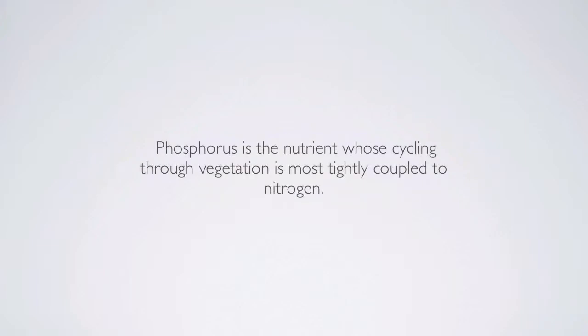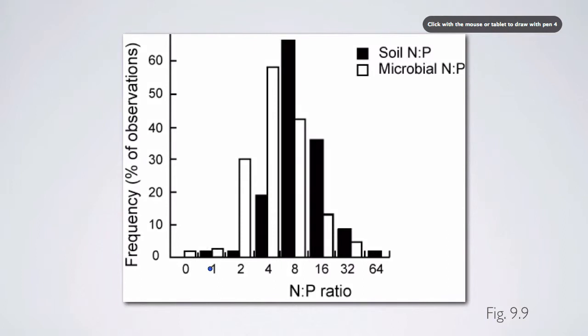We're going to just spend a little bit of time on the phosphorus cycle, which is a good counterpoint to the nitrogen cycle. Phosphorus is a nutrient whose cycling through vegetation is most tightly coupled to nitrogen. So it's a nutrient that's used in relatively high amounts, it's a macro element. And we see relatively constrained nitrogen to phosphorus ratios in soils and in microbes. For all intents and purposes, there's a relatively low range of N to P, which means that those systems or plants that have a high demand for nitrogen also have a high demand for phosphorus.